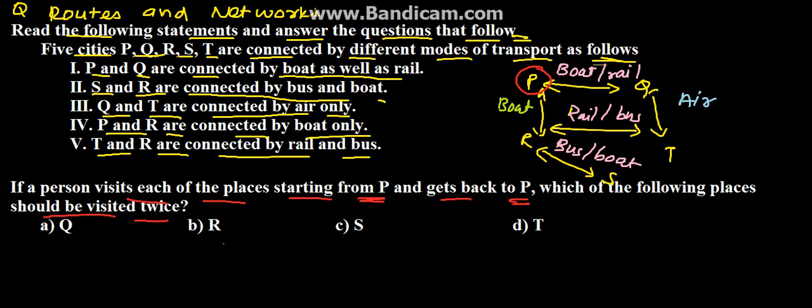So here the possibilities that can be found is start from P, then Q, then T, P to Q, then Q to T, then T to R, R to S, S to R and to P. He is back with P. This is the first possibility.